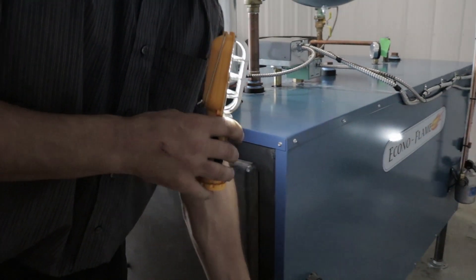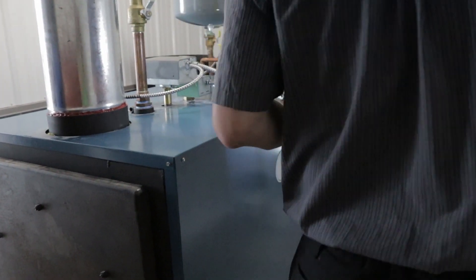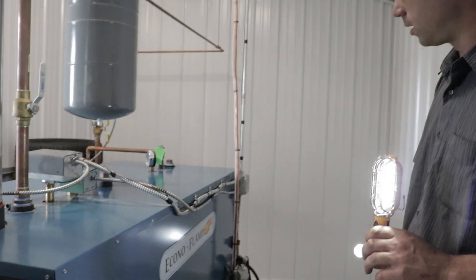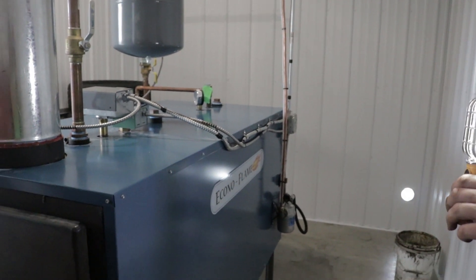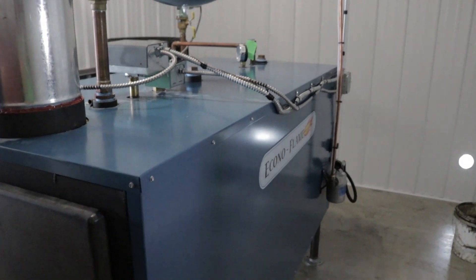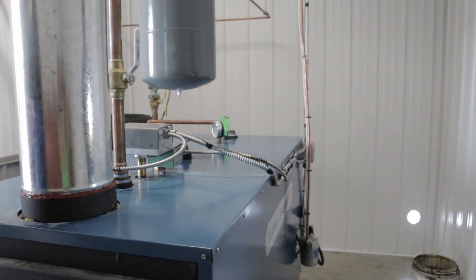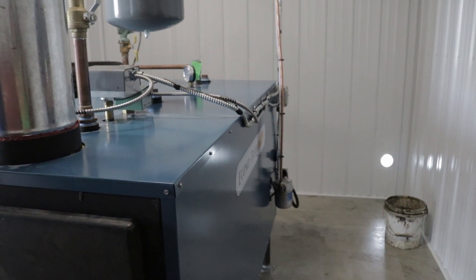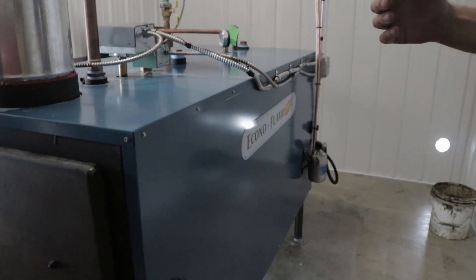On the Econa Flame Boilers, the sheet metal is constructed of galvaneal steel. That is a special galvanized coating that allows us to powder coat the metal.